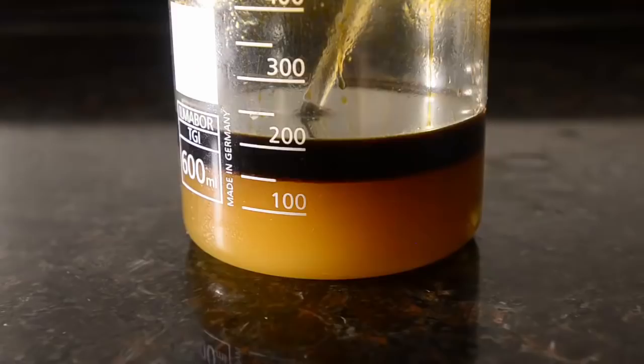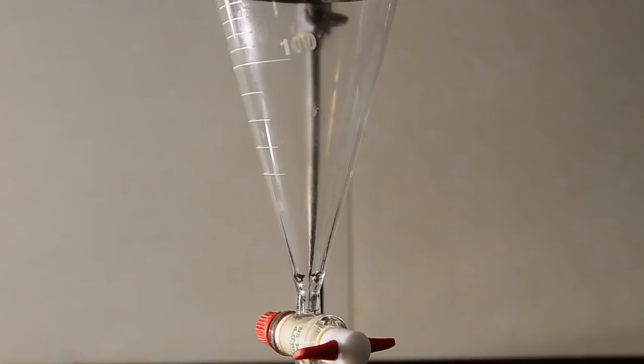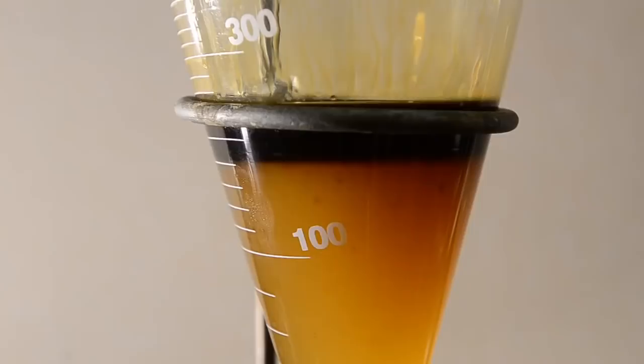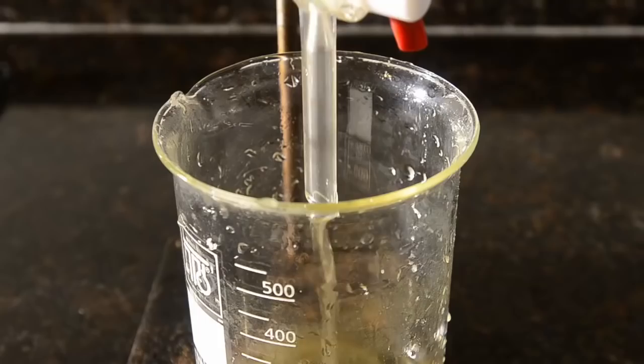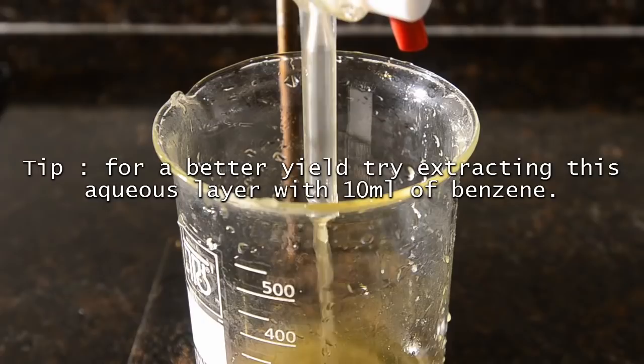The top benzene layer contains our product, so pour the mixture into a separating funnel. Allow the layers to separate well and then separate off the bottom aqueous layer. You could extract this further with a small portion of benzene if you wanted to.